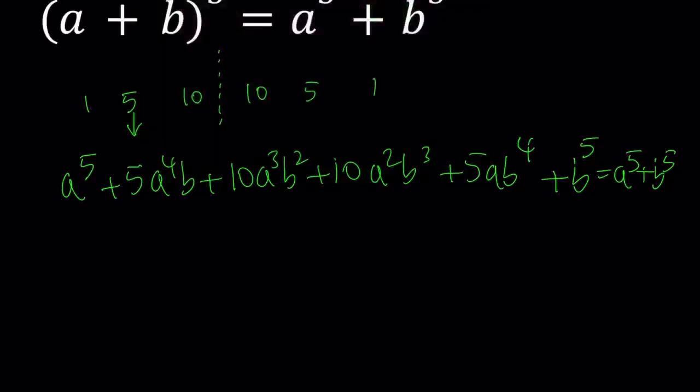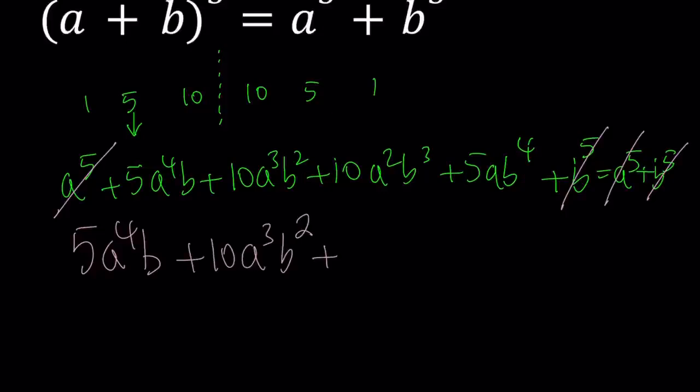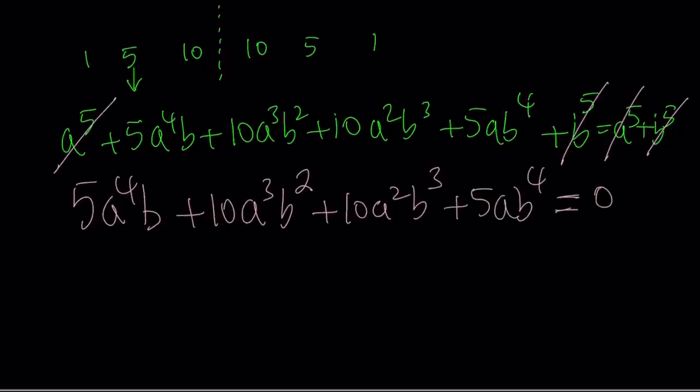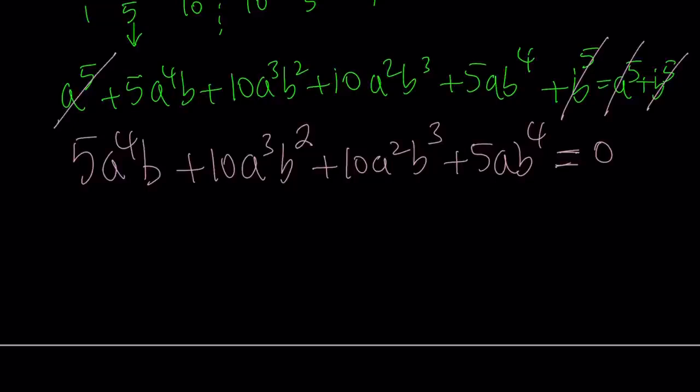First of all, a to the fifth and b to the fifth cancel out. That's nice. Leaving us a zero on the right hand side. So let's rewrite this: 5a to the fourth b plus 10a cubed b squared plus 10a squared b cubed plus 5ab to the fourth equals zero. It's always good to get zero on one side if you're trying to solve an equation because you can hopefully factor it and then set the factors equal to zero.